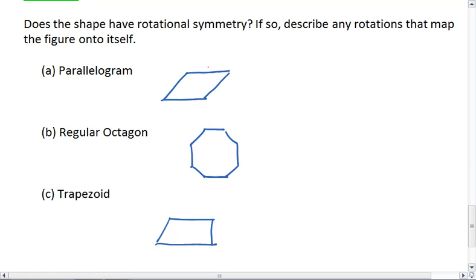Alright, for a parallelogram, a full half turn, so 180 degree rotation, about - and we'll label point A - will give us a rotational symmetry.